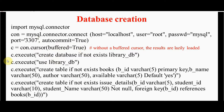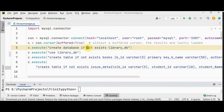Now we are creating the database using the SQL query. The database name is library_db, and we use the execute method to run all these queries. I have created two tables: books and issue_details. When you run the program for the first time, these tables will be created in the library_db database. The bid column in issue_details is the foreign key referencing bid in the books table.